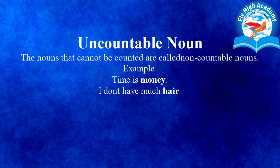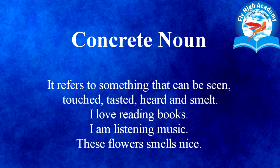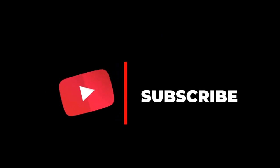Then uncountable noun. Uncountable noun वो noun होते हैं जिनको हम count नहीं कर सकते। For example, 'Time is money' — money को आप count नहीं कर सकते। 'I don't have much hair' — बाल को count नहीं कर सकते। इसके बाद है concrete noun. Concrete noun वो noun होता है जिसको हम देख सकते हैं, touch कर सकते हैं, taste कर सकते हैं और smell कर सकते हैं। जैसे 'I love reading books', 'I am listening to music', 'These flowers smell nice'. Concrete noun, abstract noun का just opposite होता है।